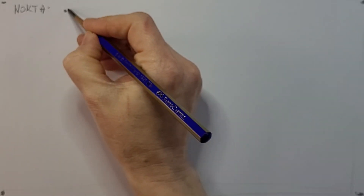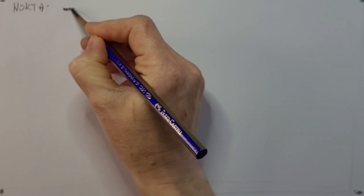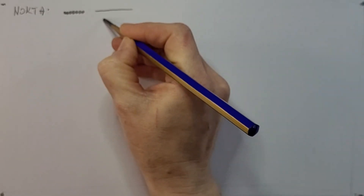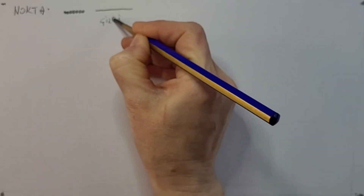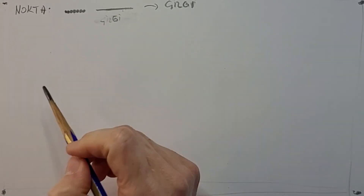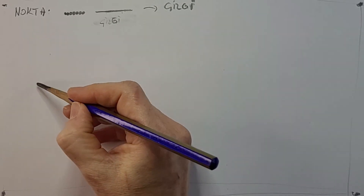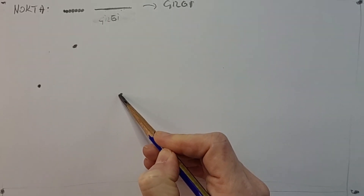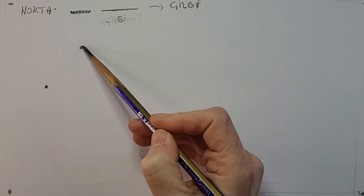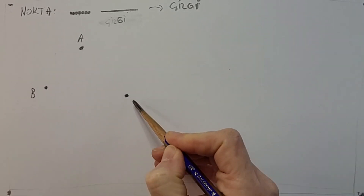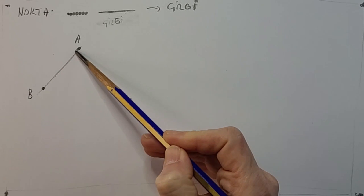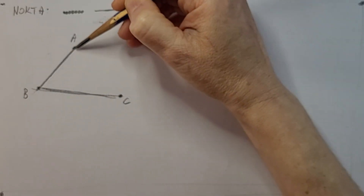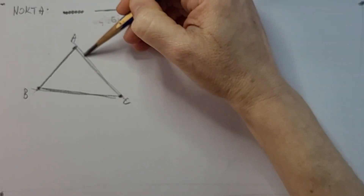Bu noktaların bir araya gelmesiyle ne oluşur? Çizgi oluşur. Örneğin şurada bir noktamız var, burada da bir noktamız var, şurada da bir noktamız var. Burası A noktası, burası B noktası, burası da C noktası olsun. A'dan B'ye giden bir çizgimiz, B'den C'ye giden bir çizgimiz, tekrar A'dan C'ye giden bir çizgimiz var.